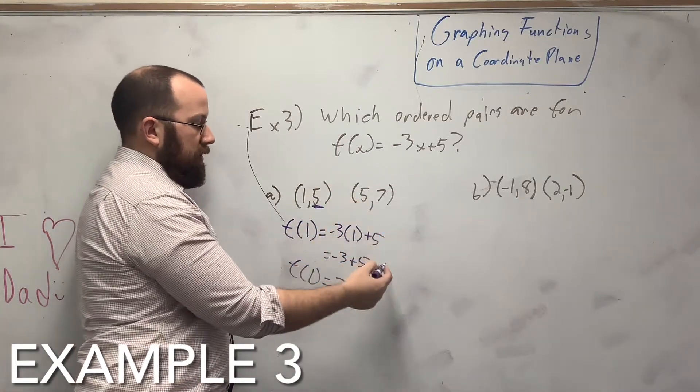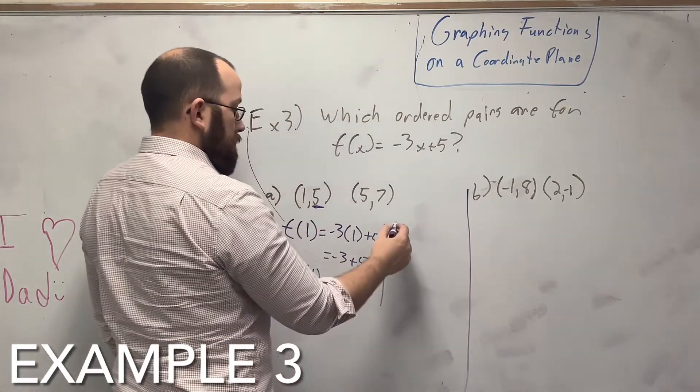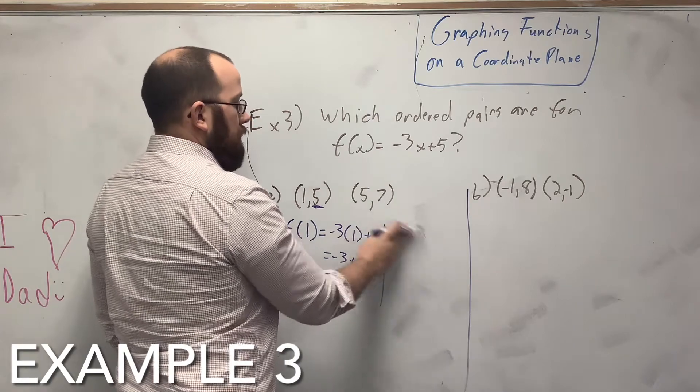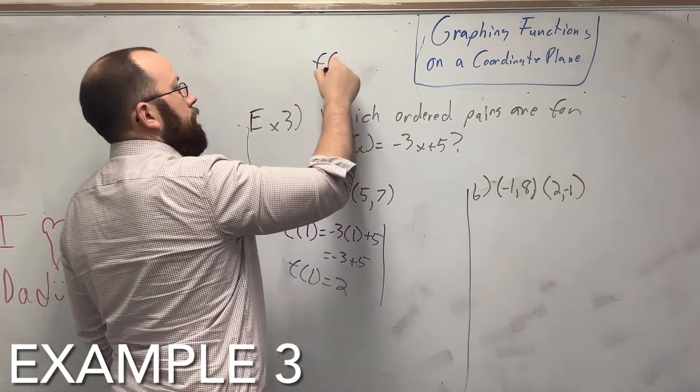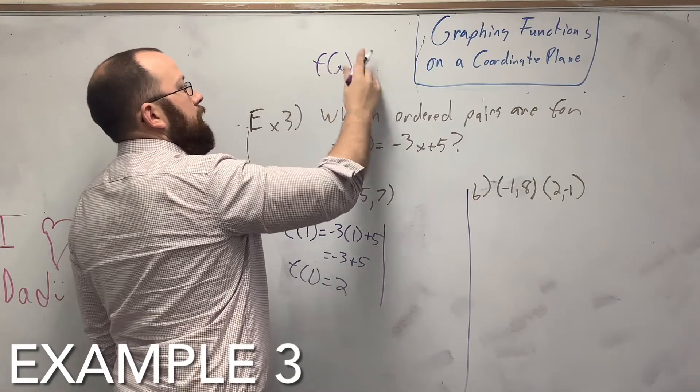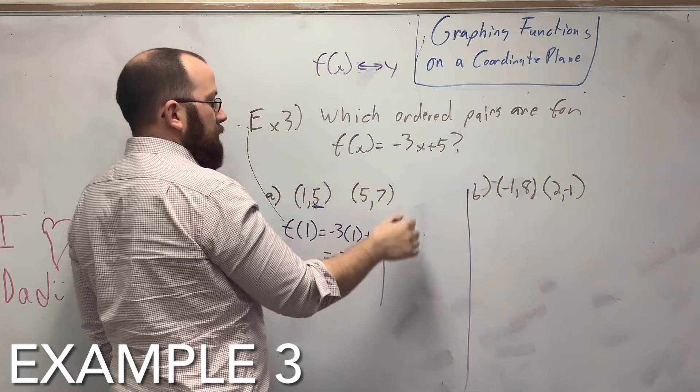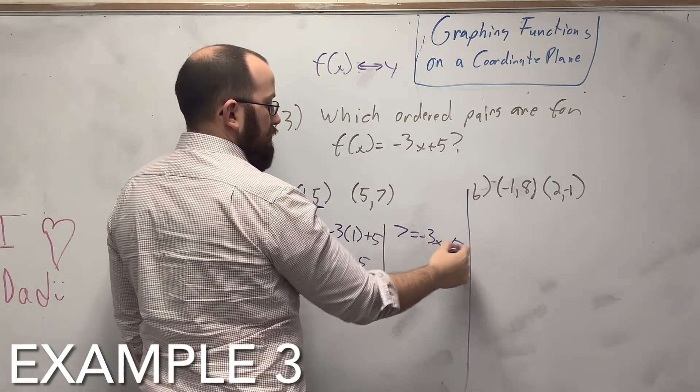I'm going to check it just for the sake of this problem. So if I say f of 5 equal... Well, I'll show you the other way to do it. So since this is also the same thing as y, I can say 7 equals negative 3x plus 5, if you want.